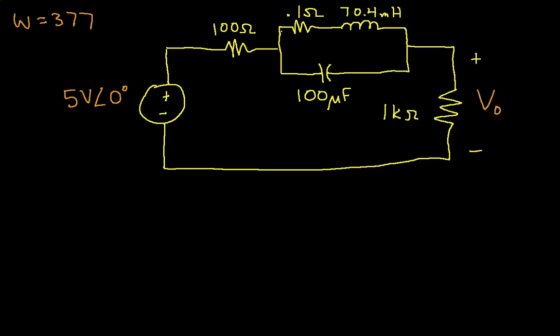The next step is to replace our inductance and capacitance with the equivalent impedances. The equivalent impedance of an inductor is jωL. ZL equals jωL, which is j times 377 times 70.4 millihenries. If I work that out correctly, I get ZL is j26.5 ohms, so we can replace it by j26.5 ohms.